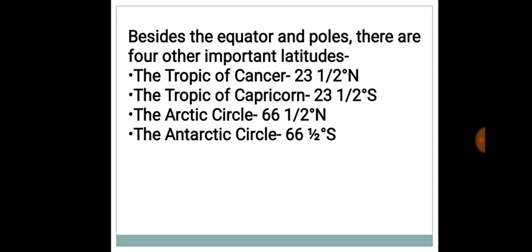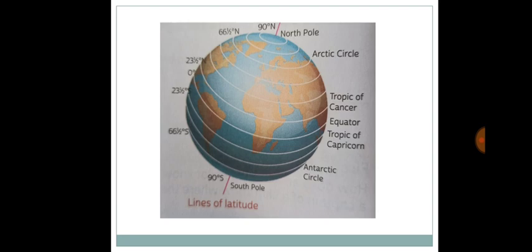The Tropic of Cancer at 23.5 degrees North, the Tropic of Capricorn at 23.5 degrees South, the Arctic Circle at 66.5 degrees North, and the Antarctic Circle at 66.5 degrees South.